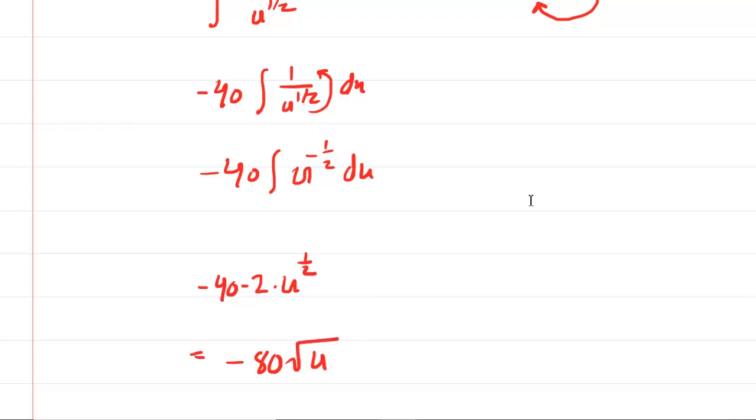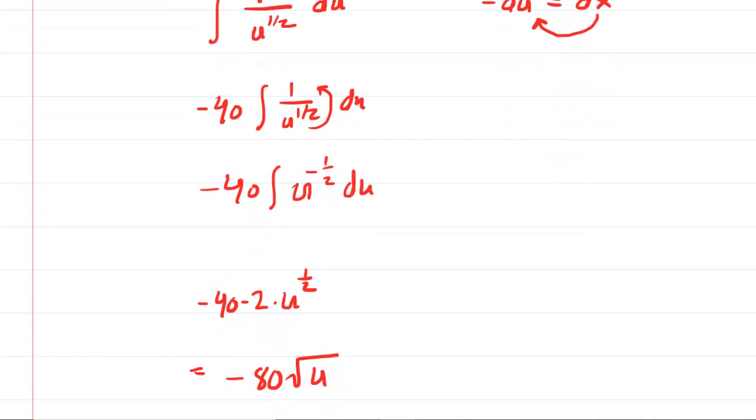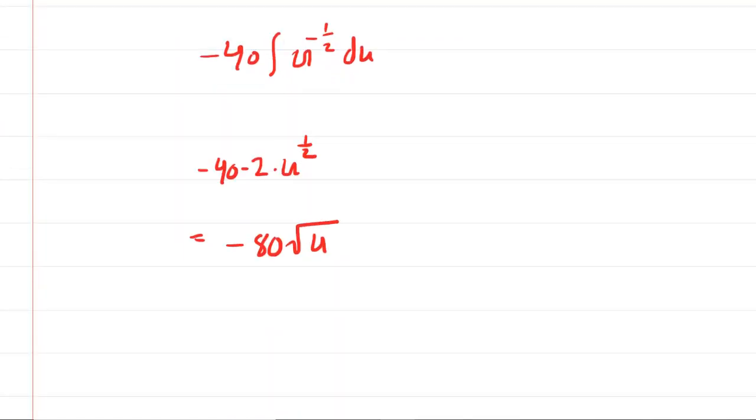We go back. We recall that u was 3 minus x, so we'll put that back in. We now have negative 80 times the square root of 3 minus x. Now we can reattach the limits.